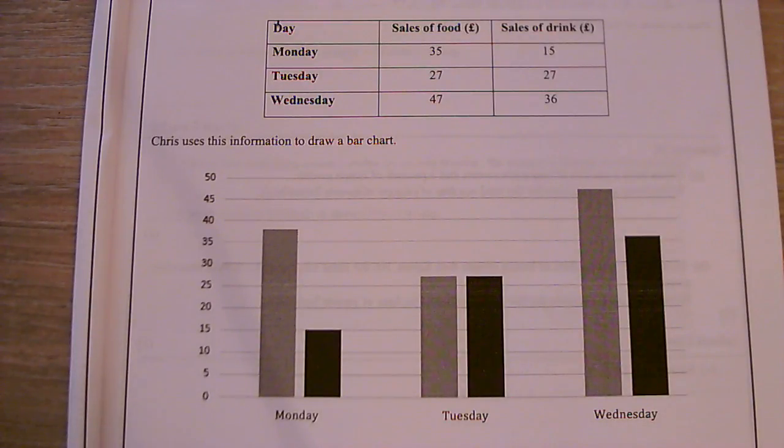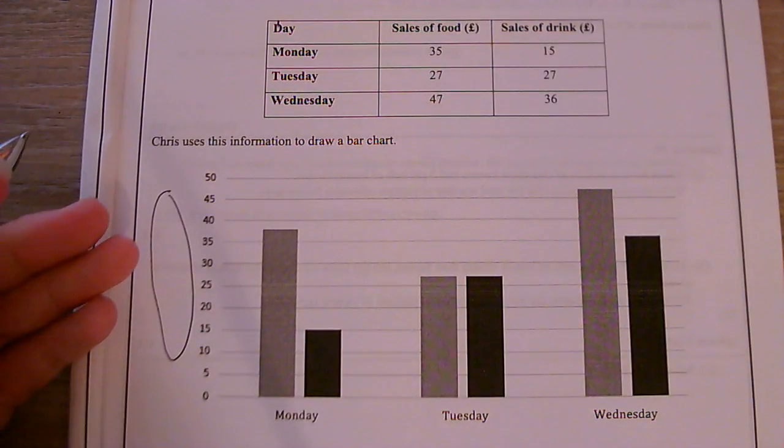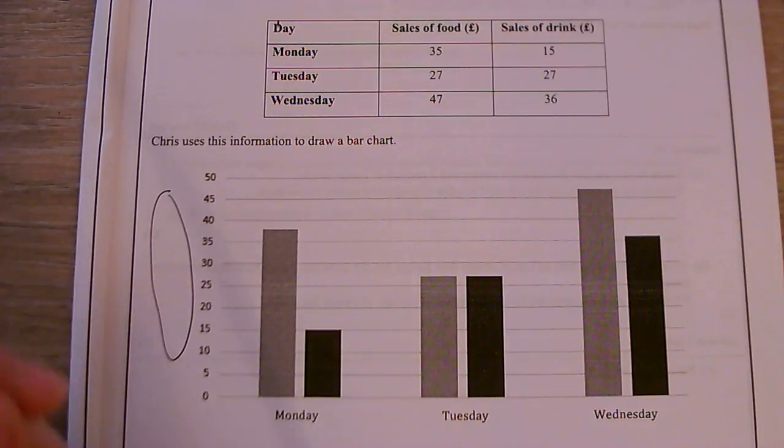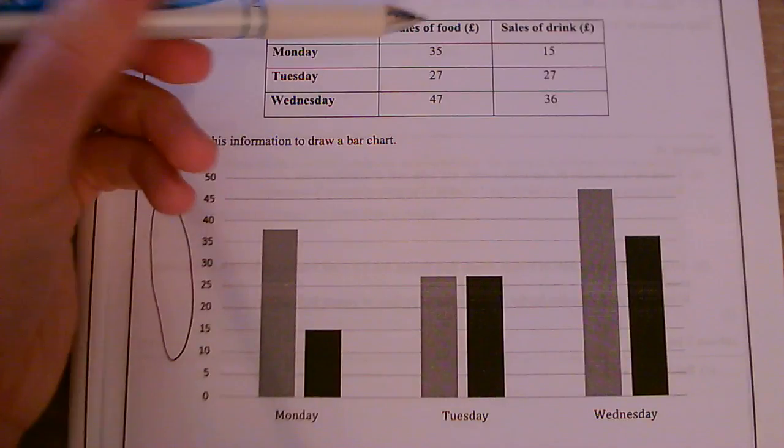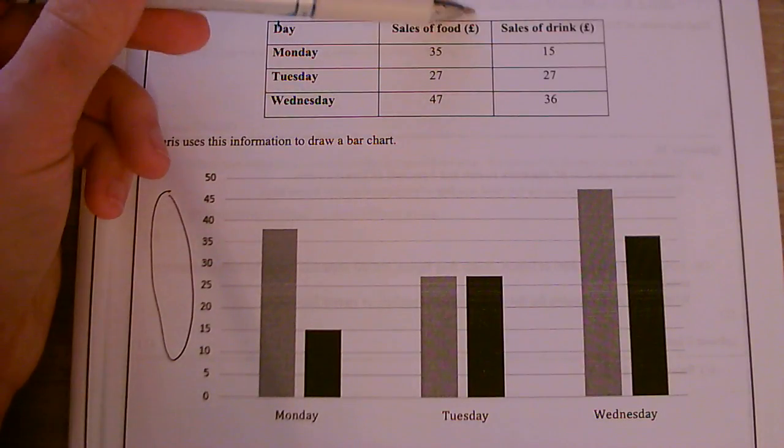The first thing I notice is there is no label here. What is this telling me? Is it telling me the number of elephants or something random? I don't know. It should actually be telling me the amount in pounds.